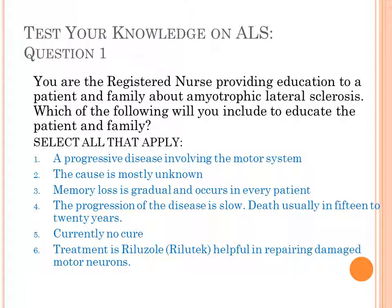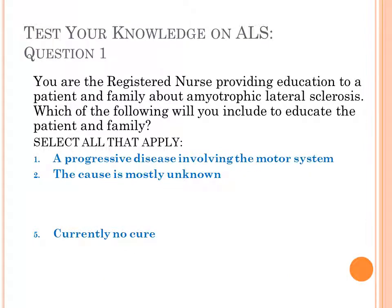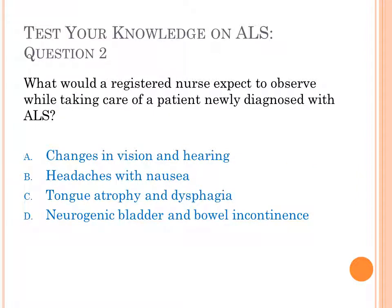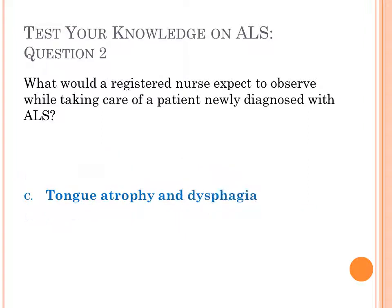The progression is pretty fast — three to five years, with not many people living past 10. And riluzole is one of our only medical treatments. Question two: what would a registered nurse expect to observe while caring for a patient newly diagnosed with ALS — changes in vision and hearing, headaches with nausea, tongue atrophy and dysphagia, or neurogenic bladder and bowel incontinence? The correct answer is C: tongue atrophy and dysphagia.